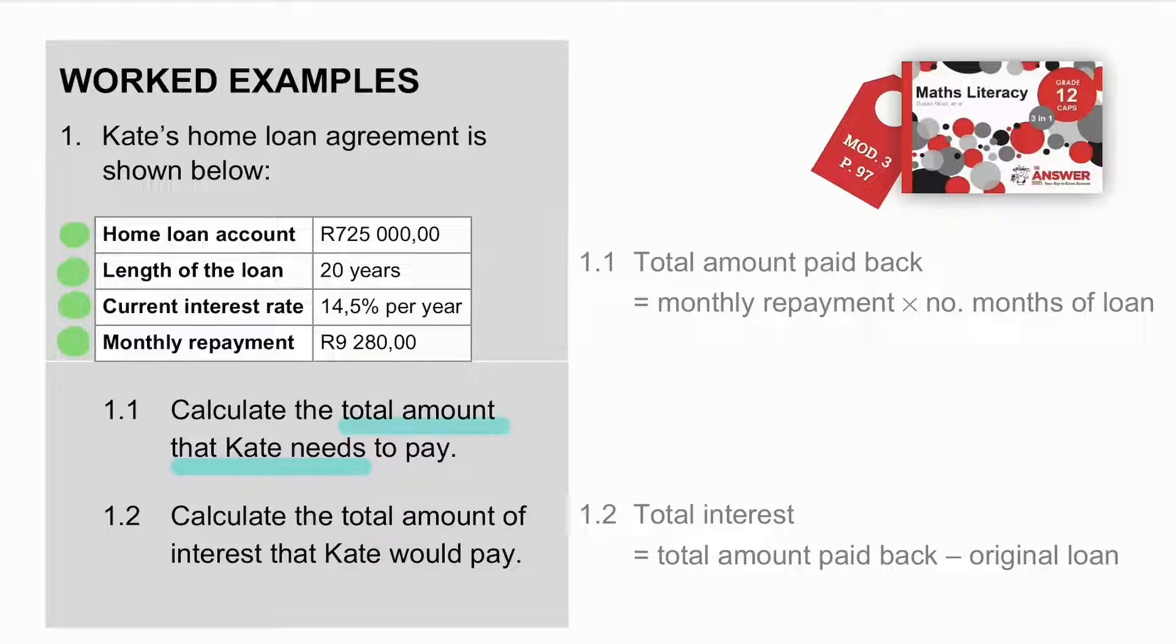There's our fancy formula again. The total amount paid back is equal to our monthly repayment times by the number of months of the loan. So, let's calculate her repayment, R9,280 times by 20 years. But wait, the formula requires months. So, we need to convert 20 years to months. We times by 12, and that gives me a total of R2,227,200.